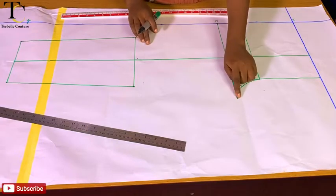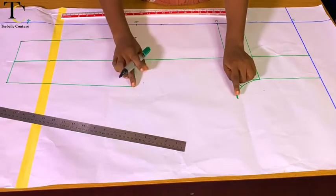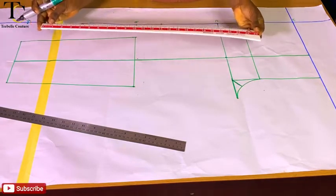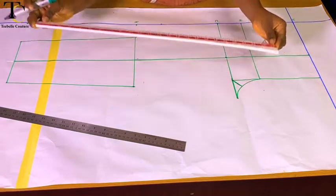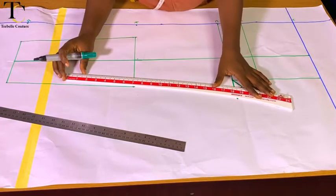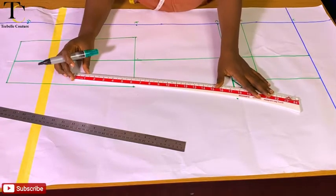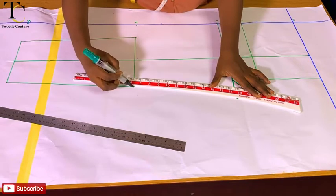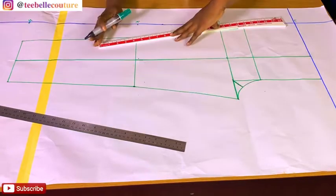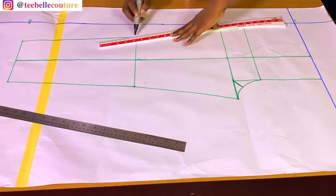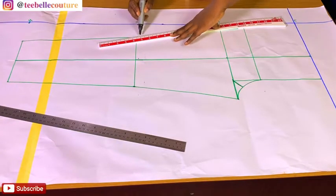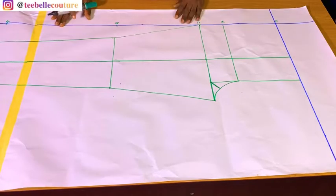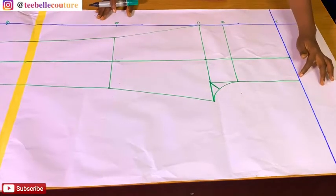The next thing I'm going to be connecting is from the crotch to the knee. I'm going to be using my trouser curve to connect from the crotch extension to the knee at the center front of the trouser pattern, and at the side front also I'm going to be using my trouser curve.